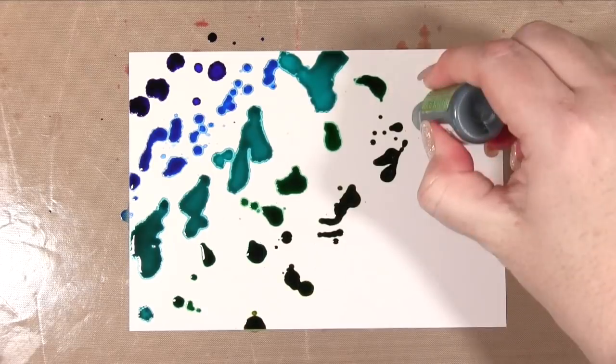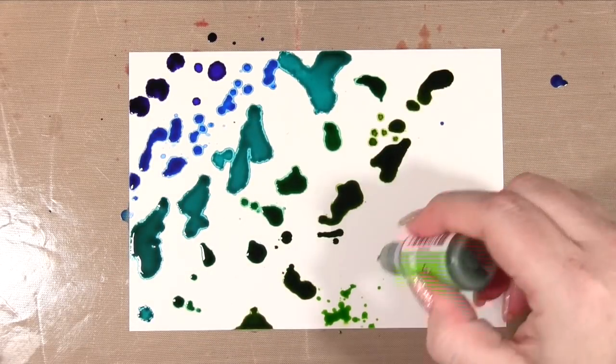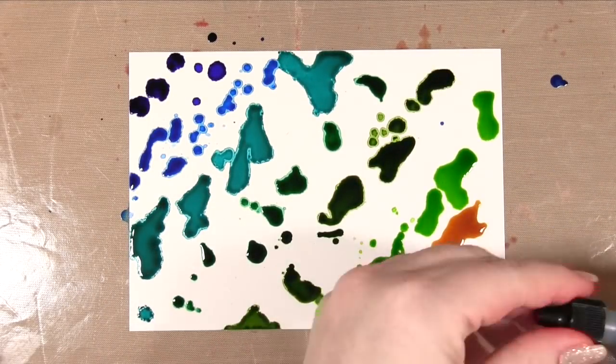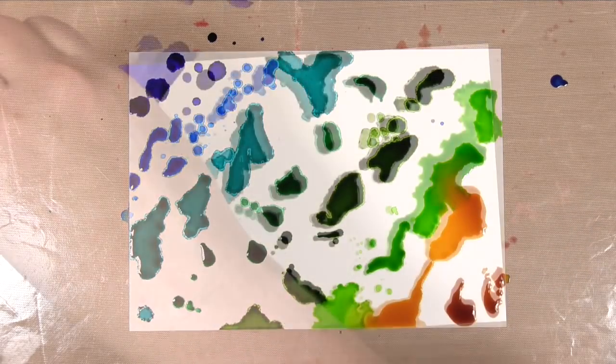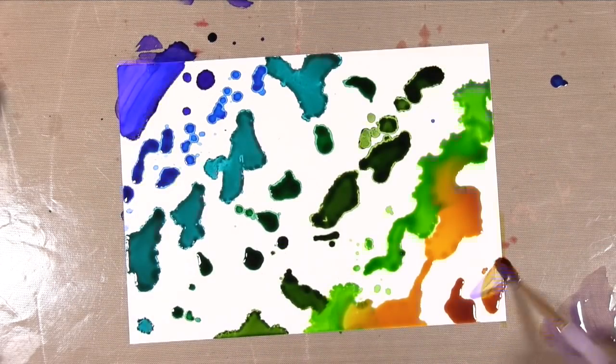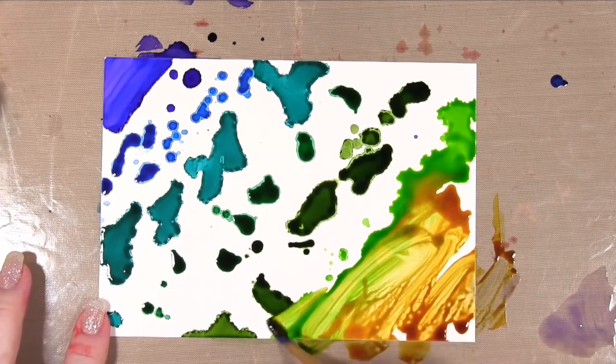So for this first one, I'm doing some kind of rainbow stripes here, just from blues down to yellows, and then I'm taking some pure alcohol